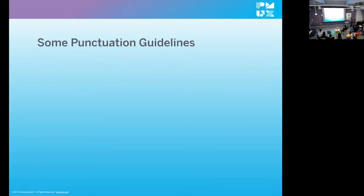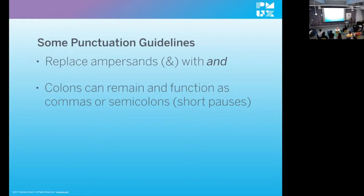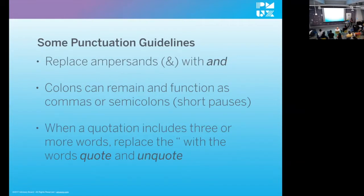We also created guidelines for important punctuation not currently covered by the Amazon Alexa design guidelines. For instance, ampersands — if Alexa hits an ampersand in your article, it just stops reading. Just stops. That happened after we published our Daily Briefing, so you have to replace the ampersand with the word 'and.' Colons can remain and function as commas or semicolons — short pauses. And Alexa won't read quotations differently from regular text, so we decided when a quotation contains more than two words, we replace the quotation marks with the words 'quote' and 'unquote.'